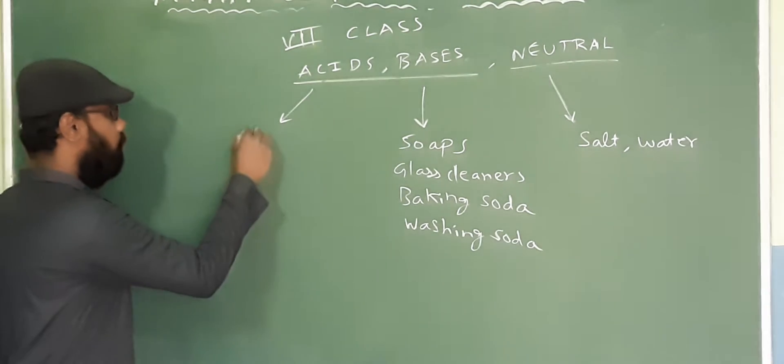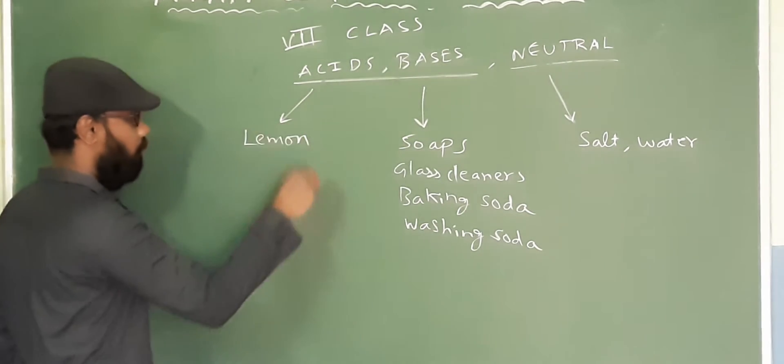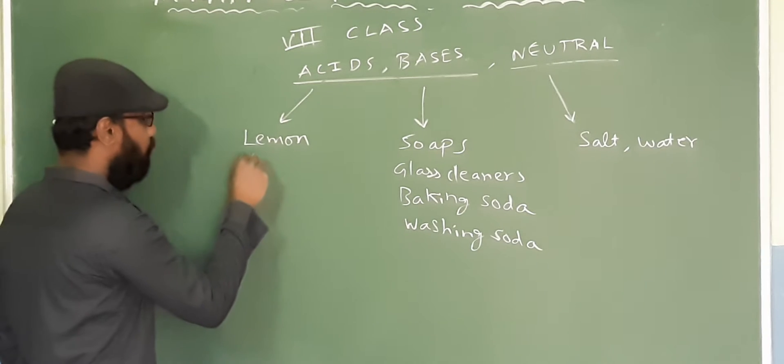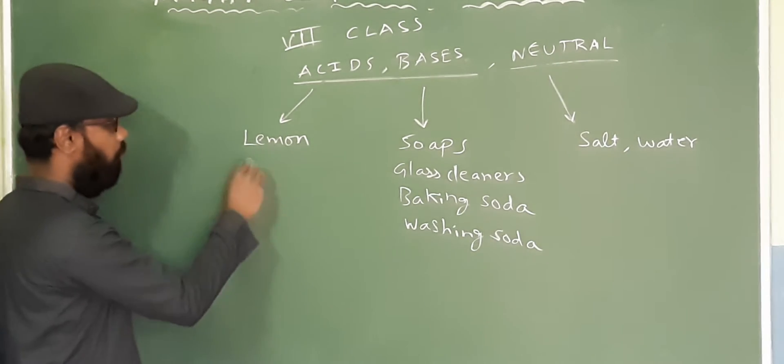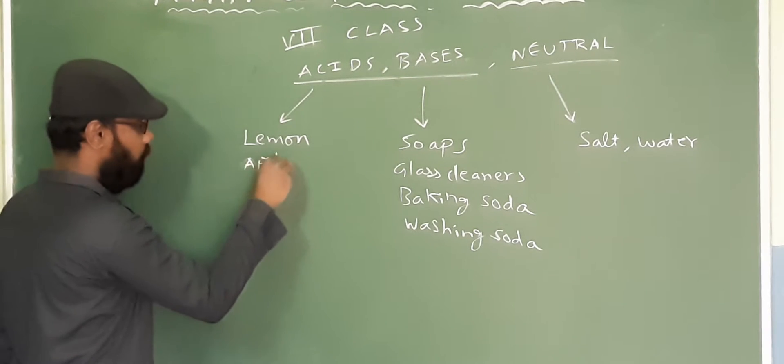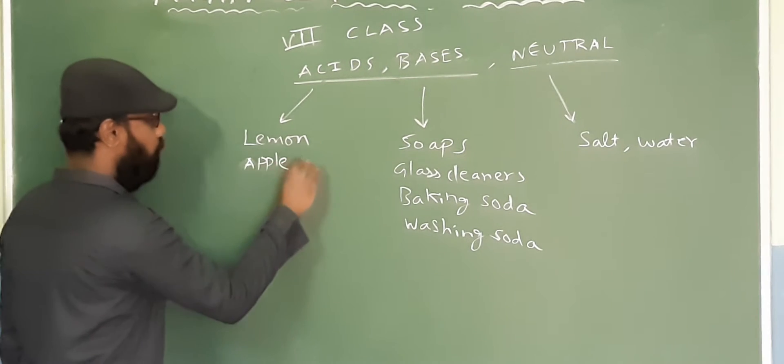And acid - you also have many examples. There is lemon. And not only lemon, you will see acid in many different kinds of fruits.